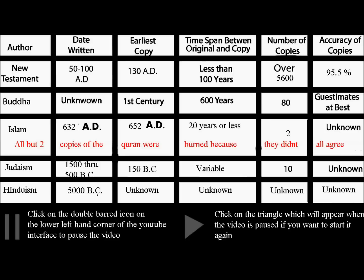First, we have the author. The authors of the New Testament are various people. We have Buddha and his writings. Islam and the Koran by Muhammad. Judaism, which is dozens of different writings. And Hinduism, for which it is unknown who the writings are. We're going to start off with the date written, then the earliest copy.